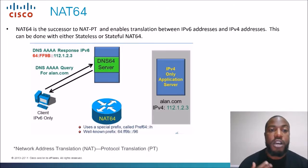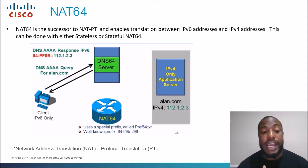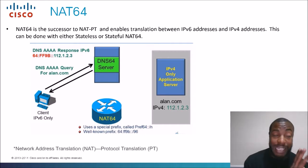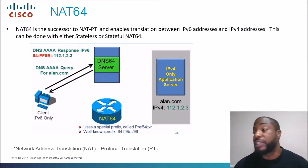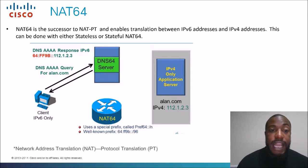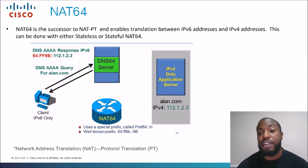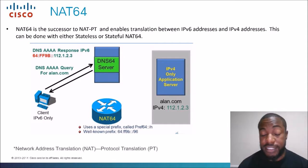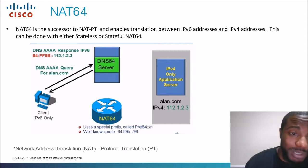NAT64 is the successor to NATPT — network address translation, protocol translation — which was basically the first version of NAT64. It was a mechanism to allow IPv6 devices or hosts to talk to IPv4 devices or hosts, and vice versa. It enables translation between IPv6 addresses and IPv4 addresses. This can be done with either stateless or stateful NAT64, and we'll discuss the difference between the two in the next couple of slides.